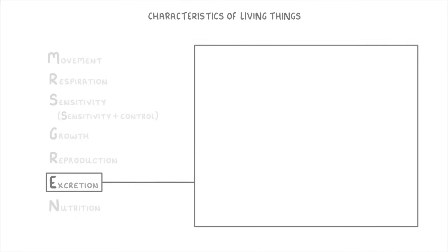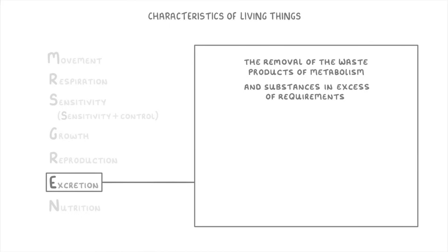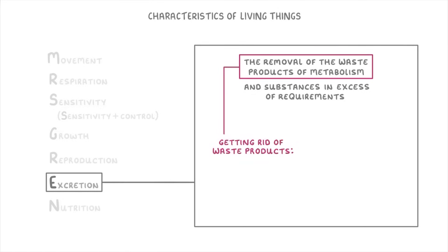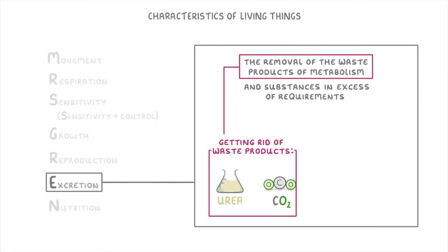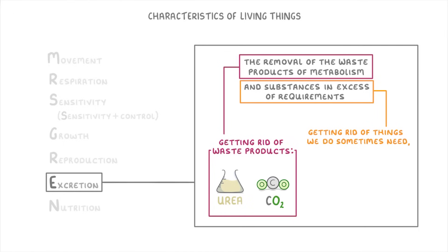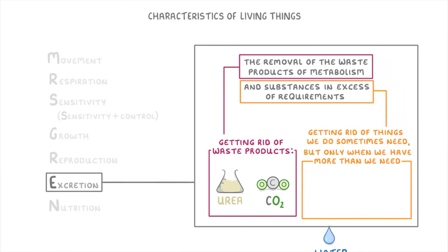Next we have Excretion. Basically it refers to the removal of the waste products of metabolism, and also substances that are in excess of requirements. The first part means getting rid of waste products like urea and carbon dioxide which we produce but don't want. The other part refers to getting rid of things we do sometimes need but only remove when we have more than we need — this includes things like water and mineral ions, which we need to survive but sometimes have too much of, so we get rid of the excess.